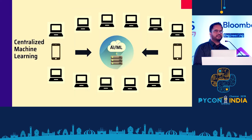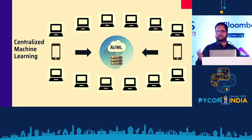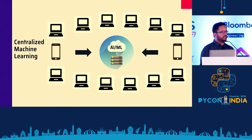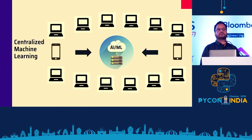The way most typical machine learning applications currently work is that data gets generated on a number of devices — laptops, phones, data centers, this myriad of devices. The data is then uploaded to a centralized server, typically a cloud, and then the models are built and deployed as an API on the cloud. You can use TensorFlow, PyTorch, scikit-learn, a whole bunch of tools that help you do this.